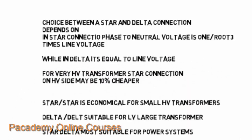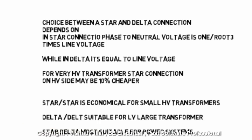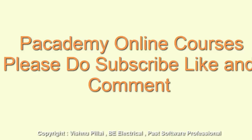The choice between star and delta depends on the application. In a star connection, the phase-to-neutral voltage is 1 over root three times the line voltage, while in delta it equals the line-to-line voltage. For very high-voltage transformers, a star connection on the high-voltage side may be about 10% cheaper, since the line-to-neutral voltage is reduced by root three. Star-star is economical for small high-voltage systems, while delta-delta is suitable for low-voltage large transformers. Star-delta is most suitable for distribution and power systems where a neutral is required, and delta-star is more used where a neutral is needed for power distribution systems.